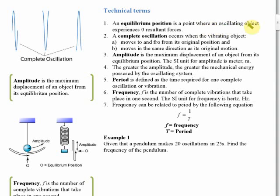Equilibrium position is a point where an oscillating object experiences zero resultant force — or no resultant force. For example, if we have a pendulum, let's scroll down a little bit.